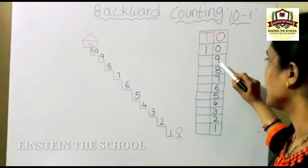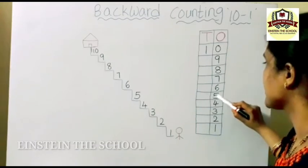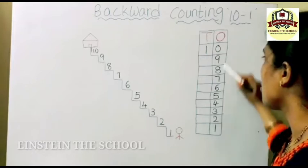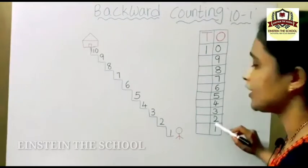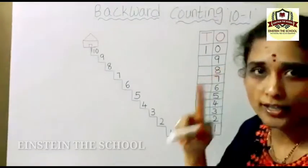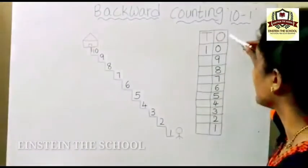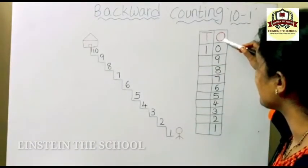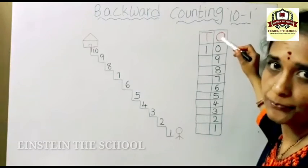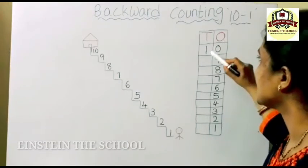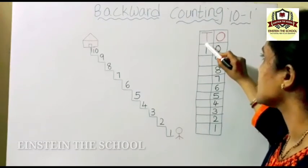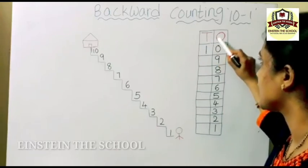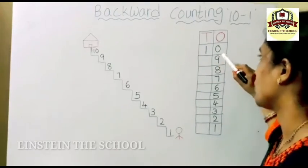10 is a 2-digit number, so you will write 1 in the tens place and 0 in the ones place. And 9, 8, 7, 6, 5, 4, 3, 2, 1 — all are single digit numbers. So we are writing them under the ones place. 10 is a 2-digit number, so first we write 1 under tens and 0 under ones.